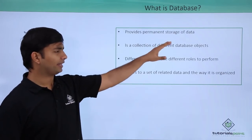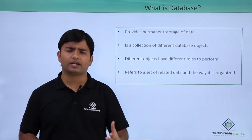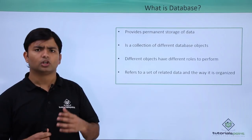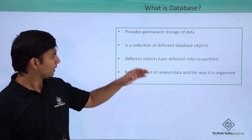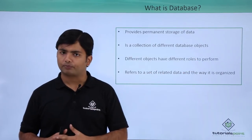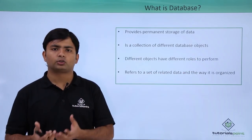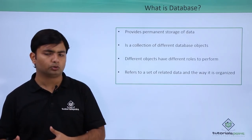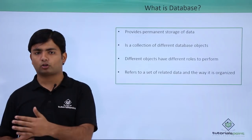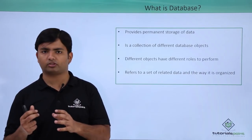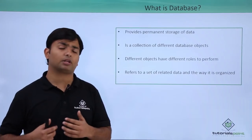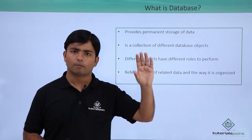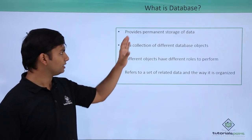Apart from tables, a database may have views, indexes, synonyms, procedures, and functions, which you will find covered in this video tutorial. Different objects have different roles to perform. A table's goal is to store data. Views are used to restrict data. Triggers perform validation or take some implicit actions. Basically, each and every database object has a different role to perform.